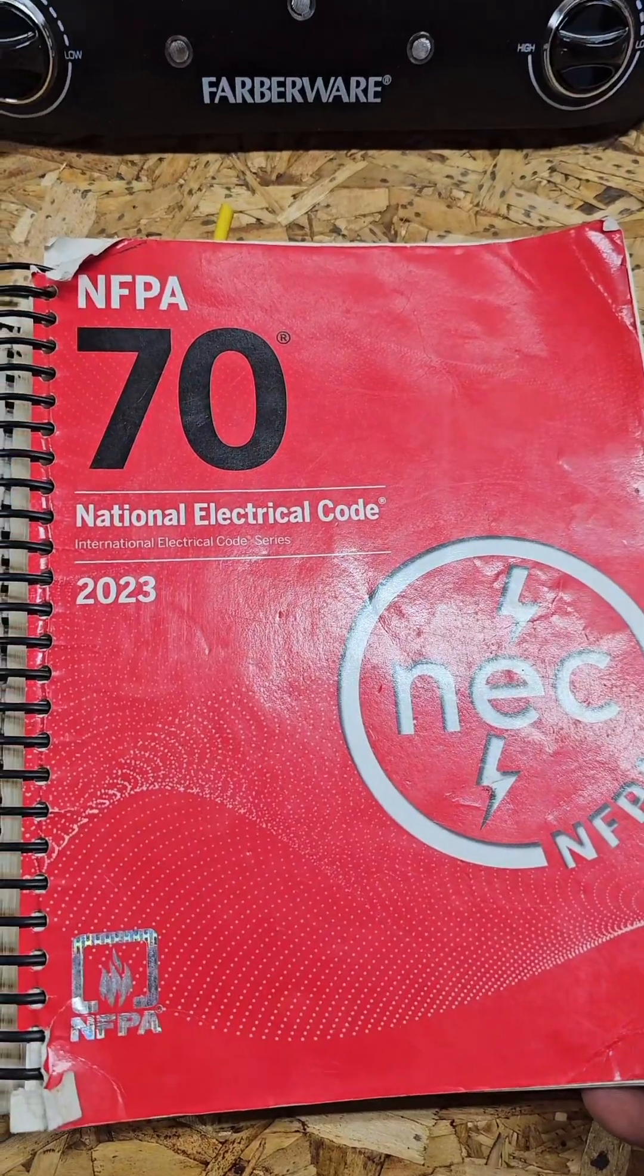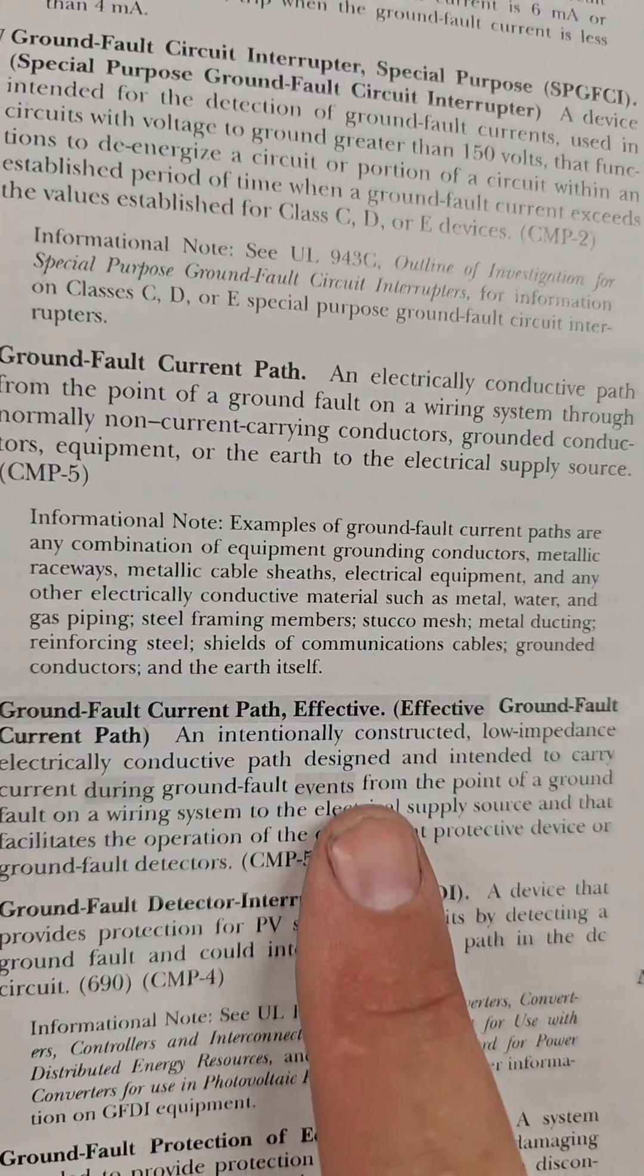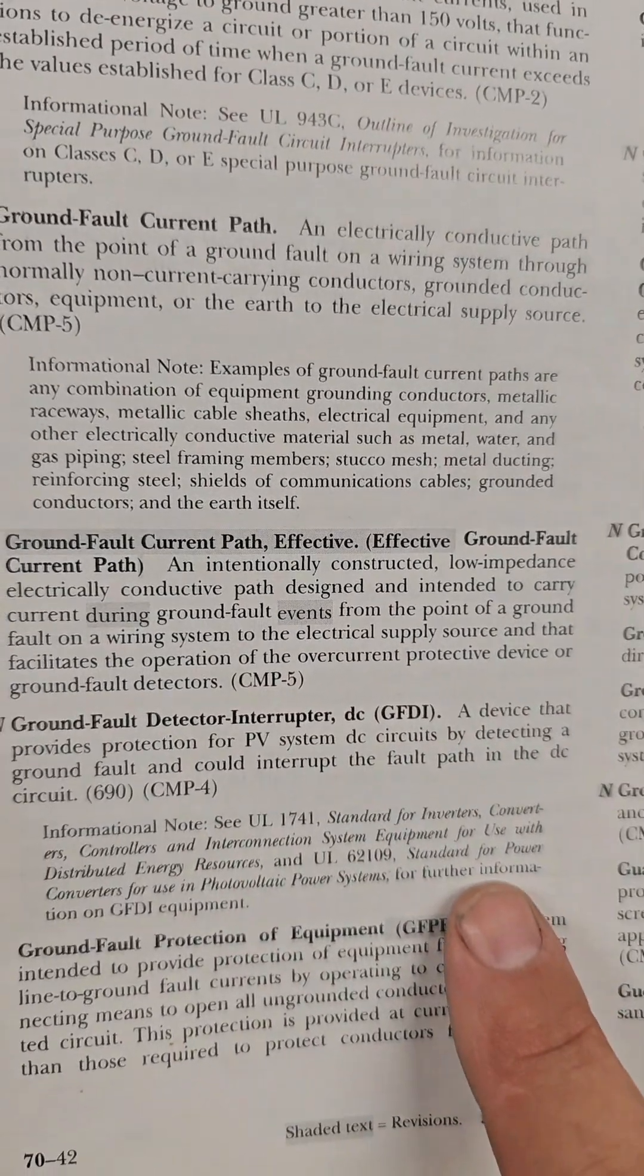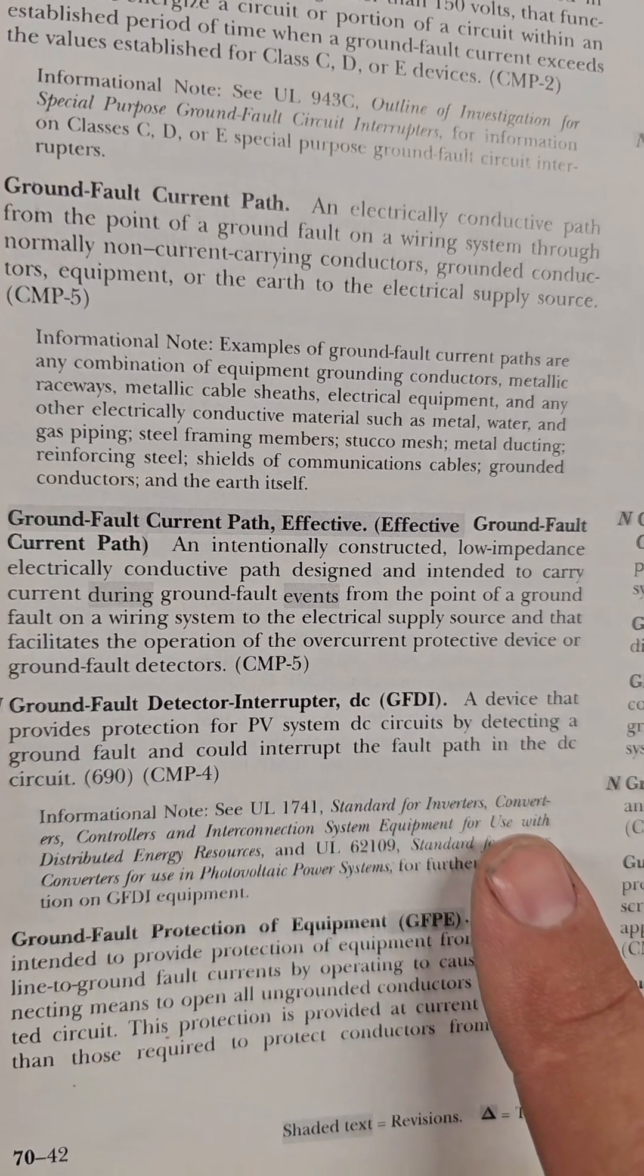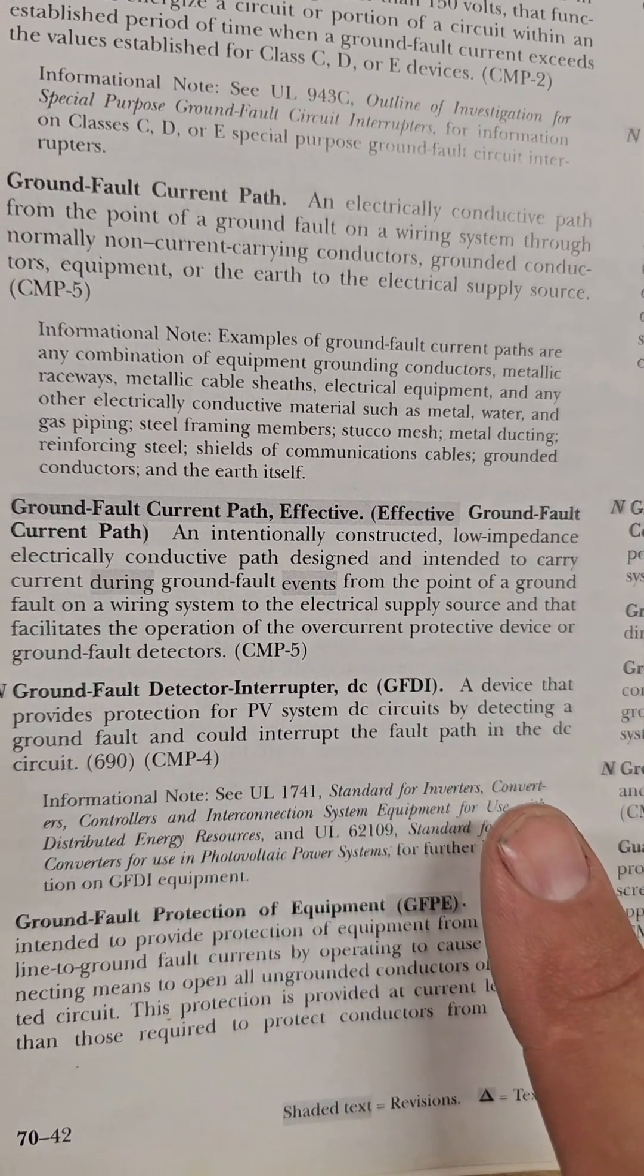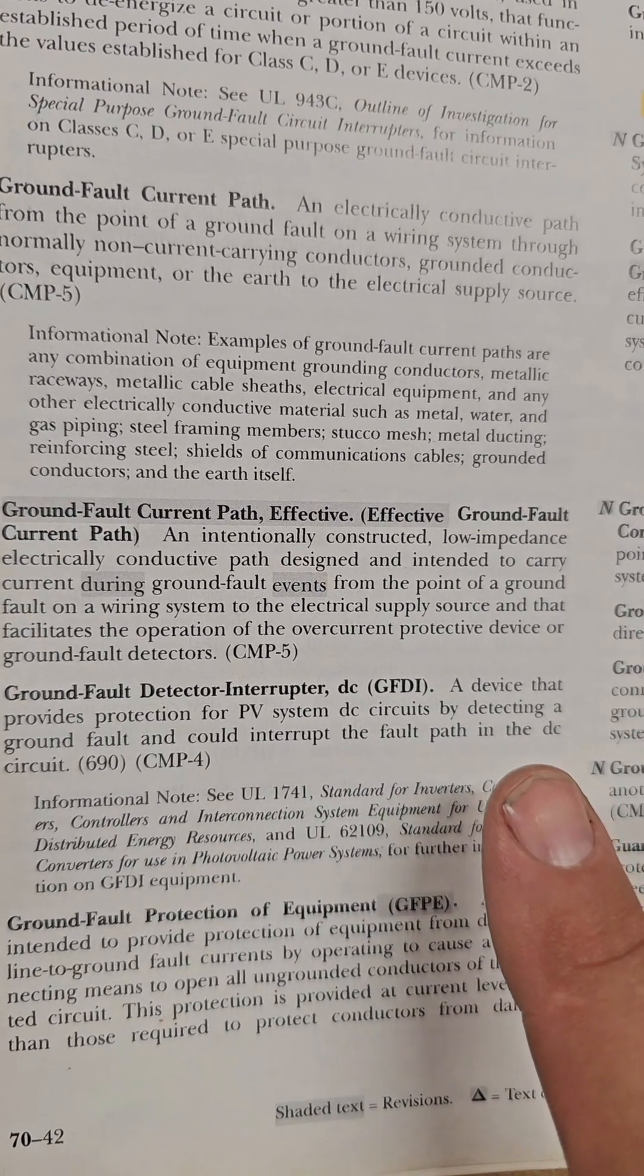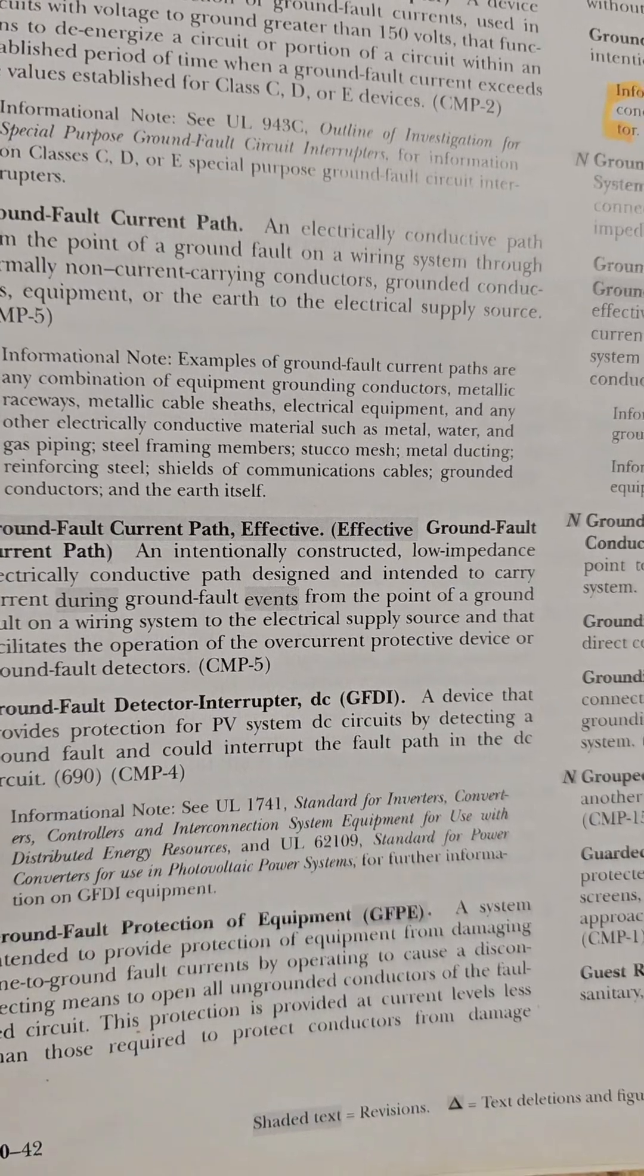So the definition has been changed a lot over the years, and I really like the definition in the 2023 code for what is an effective ground fault path because the word earth is not even in the definition. Let's look. All right, we're in the 2023. If you go to definitions, you have a ground fault path, but you have an effective ground fault path. So if you read the definition for effective ground fault path, an intentionally constructed low impedance electrically conductive path designed and intended to carry current during ground fault events from the point of the ground fault on the wiring system to the electrical supply source that it facilitates the operation of an overcurrent protection device. There's no mention of the earth in this definition.